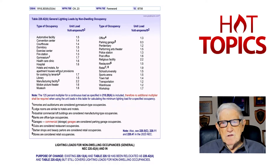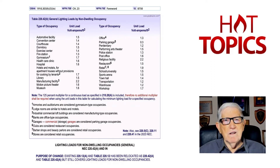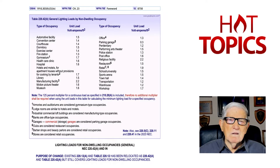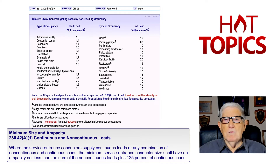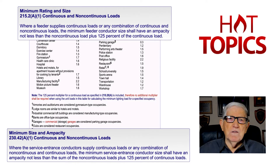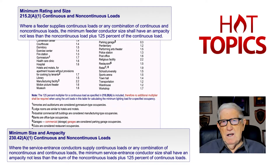Designers are saying, take a look at 210.20a being referenced there — that's a branch circuit rule. That doesn't seem to have anything to do with 230.42a, or 215.2a for a feeder or service. It doesn't seem to address that.